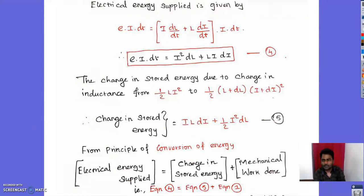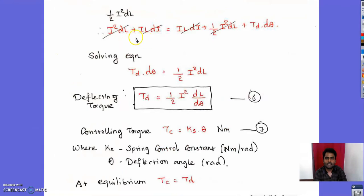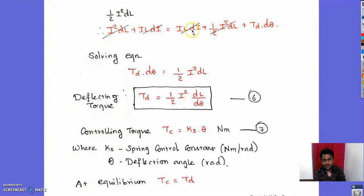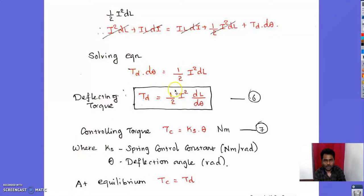Solving the energy conservation equation, the common factors cancel and we obtain: Td·dθ = ½·I²·dL. From this, the deflecting torque is: Td = ½·I²·(dL/dθ), where dL/dθ is the rate of change of inductance with deflection angle.